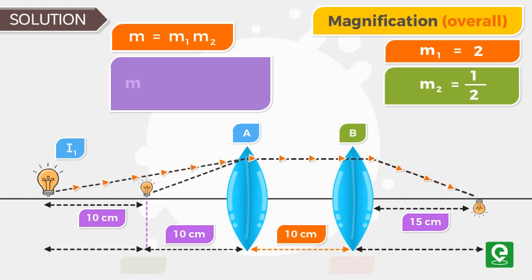On substituting the values we get M equal to 1. This means the size of image is exactly same as that of object because the overall magnification is 1. Using this information we can draw the ray diagram.